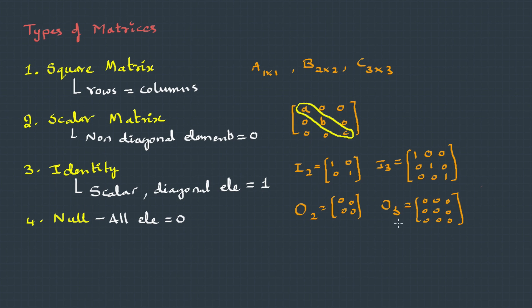The next one is upper triangular matrix. In this, the lower off-diagonal elements are zeros. Let me show this with an example. In this matrix, the elements lower than the diagonal elements are zeros. This sort of matrix is called an upper triangular matrix.